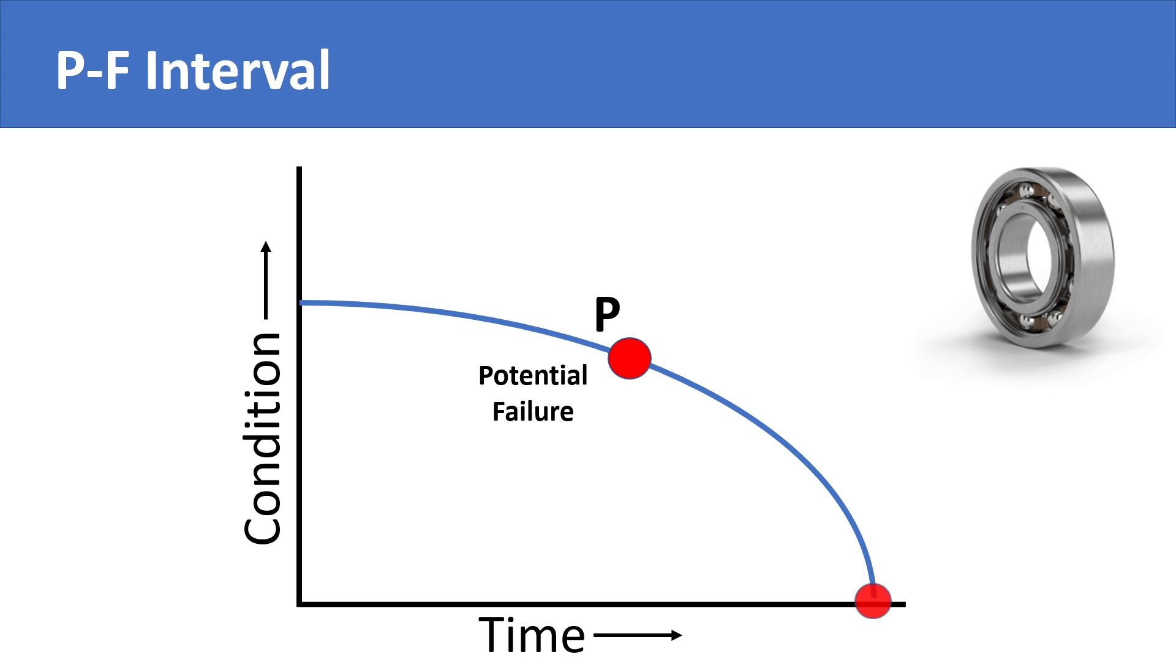The actual functional failure will take place after whatever the underlying cause is. It remains unaddressed resulting in bearing failure. PF interval is simply the time duration between potential failure and functional failure.